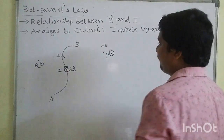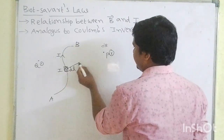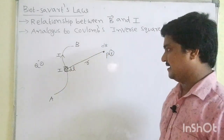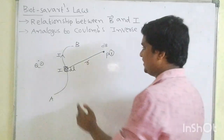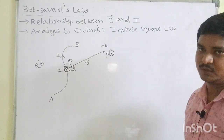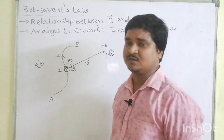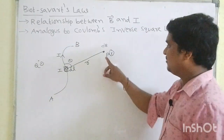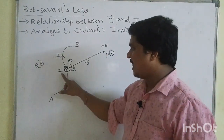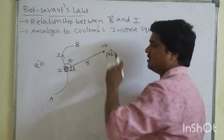Our aim is to find the magnetic field at point P. I will join the current element and also P point. This length is r — the distance between the current element and the line joining point P is r. The angle between the current element IDL and r is theta.